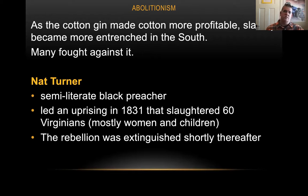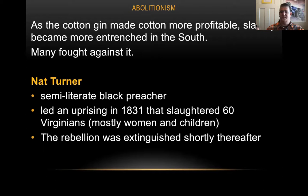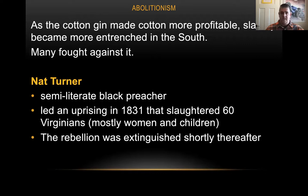We do see some uprisings. One was by Nat Turner, a semi-literate black preacher who led an uprising in 1831 that slaughtered somewhere between 45 and 60 people in Virginia — mostly women and children. That rebellion was extinguished shortly thereafter, although Nat Turner did write something that, at least in his mind, justified what he was doing.